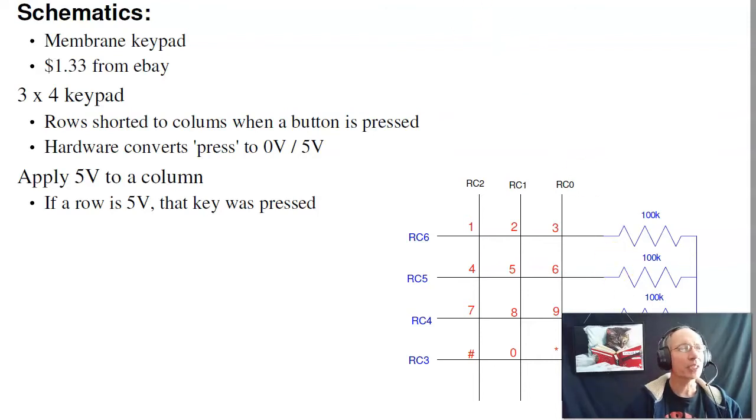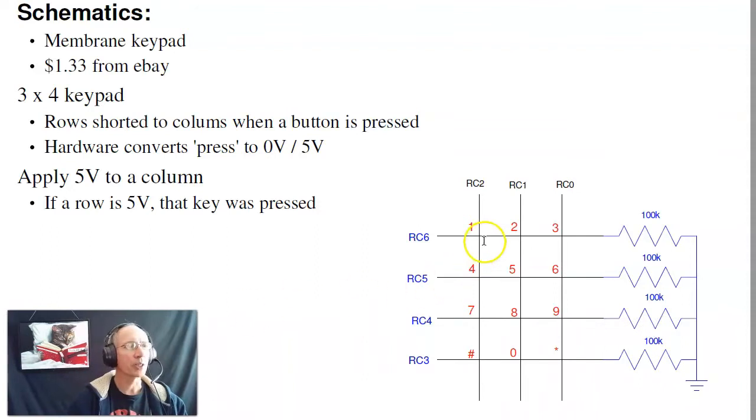Now the schematics for a keypad are as follows. The one we're using is a membrane keypad, it's $1.33 from eBay. It has seven pins arranged as three rows and four columns. When I push a button, like push one, the first column is shorted to the first row. If I push button five, the second column is shorted to the second row. So it's just open or short.